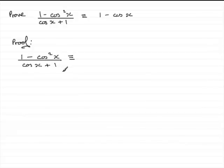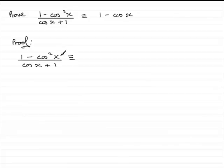Now, what is this identical to? Well, I look across and try to get a few ideas. When I see something like 1 minus cos x and I've got 1 minus cos squared x, this makes me think of a concept called the difference of two squares. It crops up an awful lot in trig identities that have got squared functions in them.